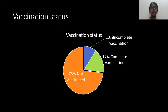Coming to the vaccination status, 73% of patients were not vaccinated, 10% of the patients had received only one dose of the vaccine, and 17% of patients had received more than one dose of the vaccine.